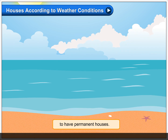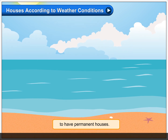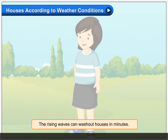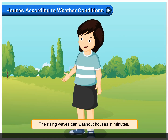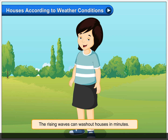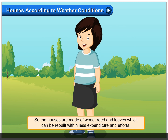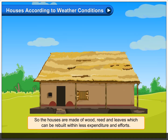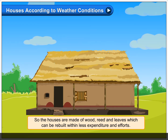In coastal areas, the high waves rising do not allow the inhabitants to have permanent houses. The rising waves can wash out houses in minutes, so the houses are made of wood, reed, and leaves, which can be rebuilt with less expenditure and effort.